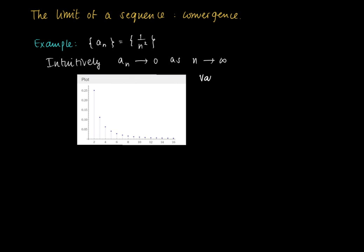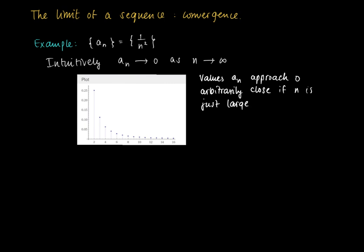In a graph, we can see that this is actually a decreasing sequence and that the values a_n approach zero. What we mean by that is that by taking n large enough, the elements a_n are arbitrarily close to zero — by taking n large enough, we can find elements a_n as close to zero as we want.